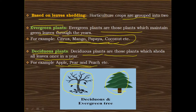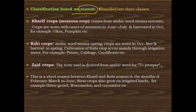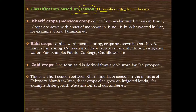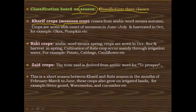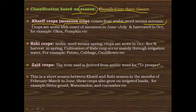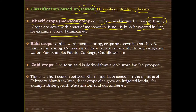The next classification is based on the season in which a crop is cultivated. These are classified into three classes. The first one is the Kharif crops, also known as monsoon crops, because they are cultivated in the monsoon season. The word Kharif comes from an Arabic word meaning autumn, and can also mean summer. These crops are sown at the onset of monsoon in June and July and are harvested in October. For example, okra and pumpkin.